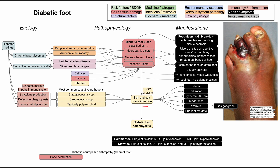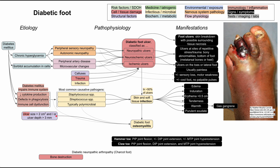In even more severe cases, this skin infection can spread to the bone — this is osteomyelitis. Many factors predispose you to osteomyelitis, including the impaired immune system, and the same bugs already in the diabetic foot ulcer often cause it. If the ulcer is bigger than two centimeters squared or has a depth greater than three millimeters, that's a good sign of osteomyelitis. Similarly, if it overlies a bony prominence or you can see exposed bone inside the ulcer, that also indicates osteomyelitis.